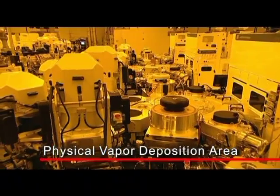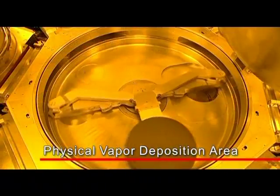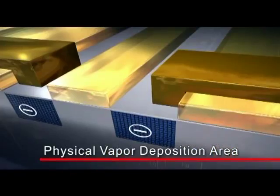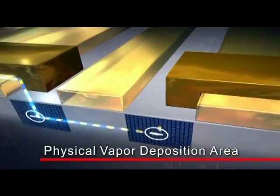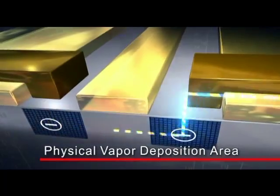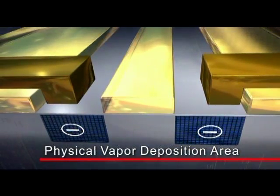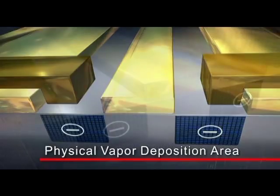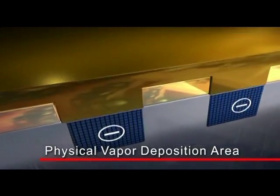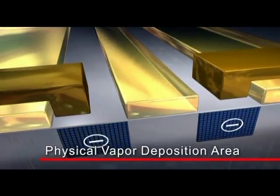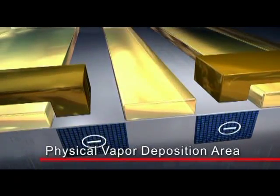Once the wafer surface is covered with several thousand to several million electronic components, the components are connected with metal conducting wires so that they can perform their designated functions. Here, the surface etched wafer is sputter-coated with a thin layer of metal film, processed with photolithography and etched to remove the unnecessary parts, and leave the metal wires connecting each electronic element.